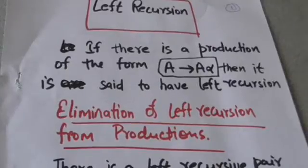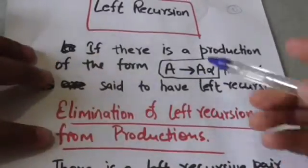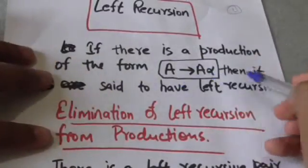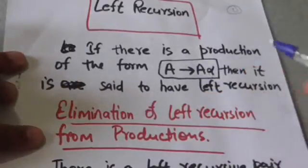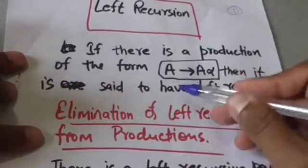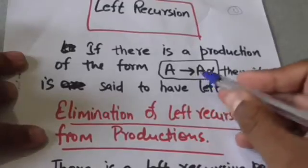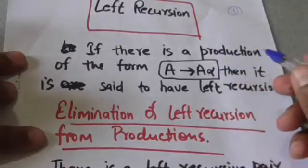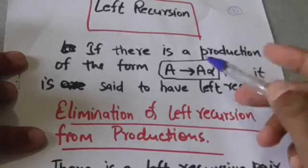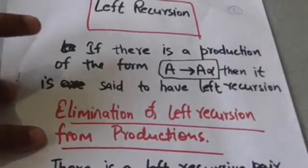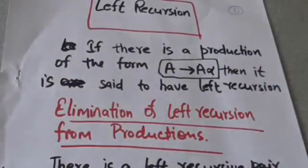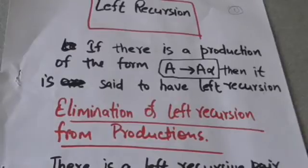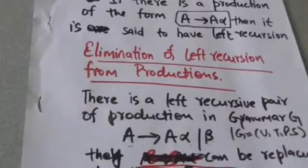Hello friends, welcome back. In this tutorial we will study about left recursion. If there is a production of the form A derives A alpha, then it is said to have left recursion. It means if the first symbol of the string on the right hand side is the same variable as on the left hand side, then that production is said to have left recursion.